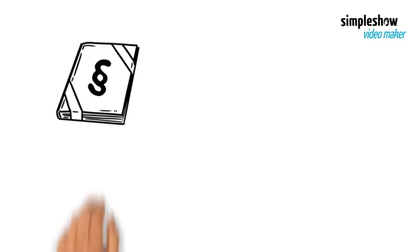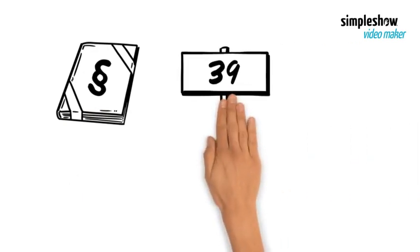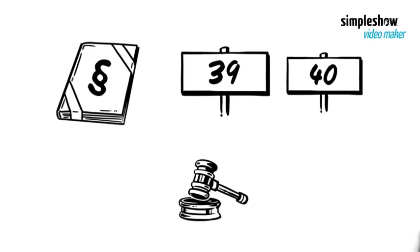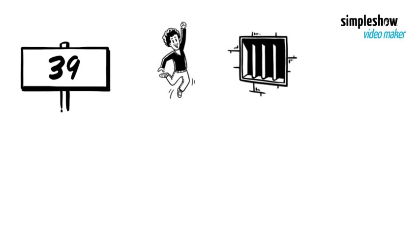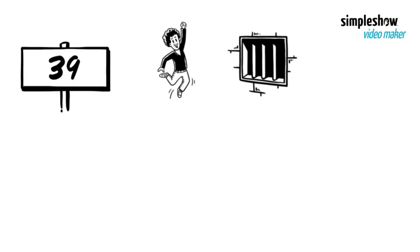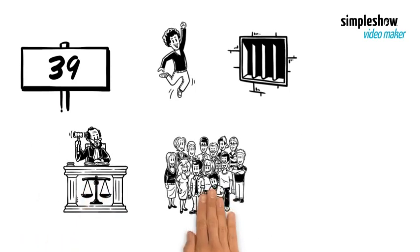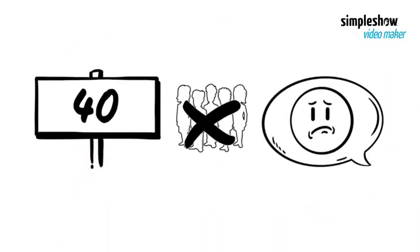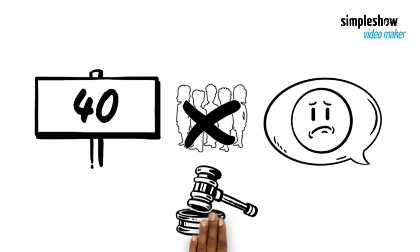Two of those laws, found in clause 39 and clause 40, lead to the basis of legal systems such as habeas corpus. Clause 39 states no free man shall be imprisoned or dispossessed except by the lawful judgment of his peers or by the law of the land. Clause 40 says to no one will we deny or delay rights or justice.